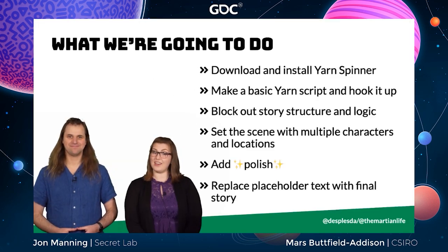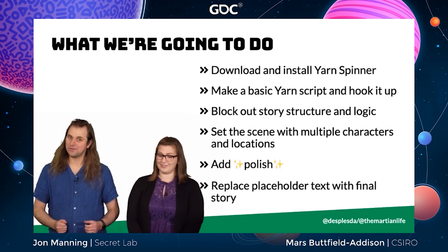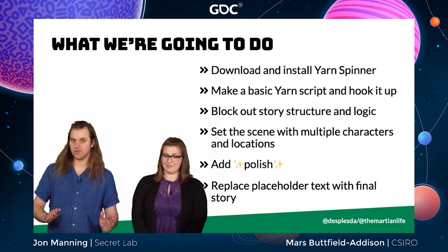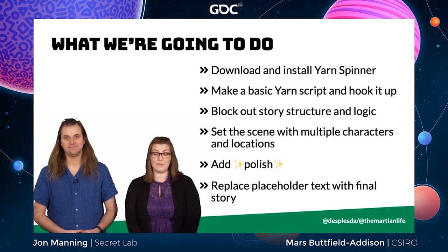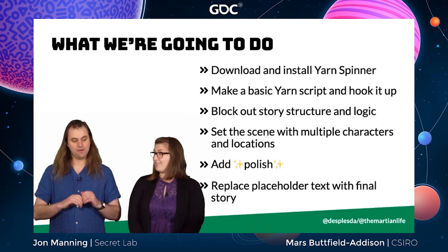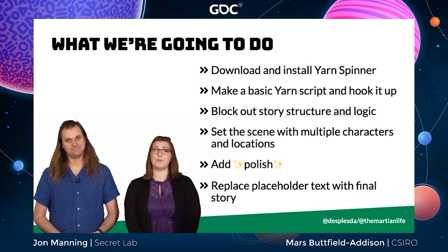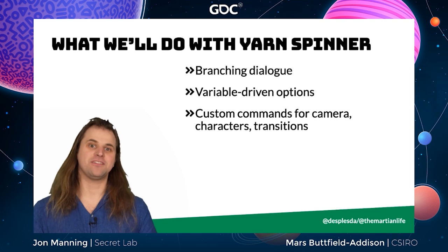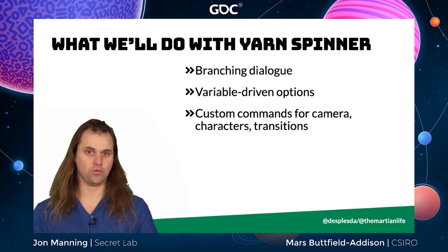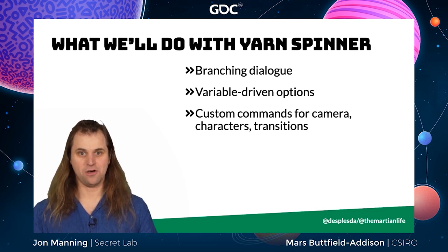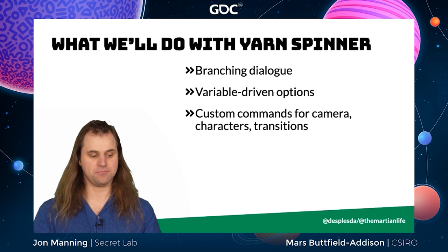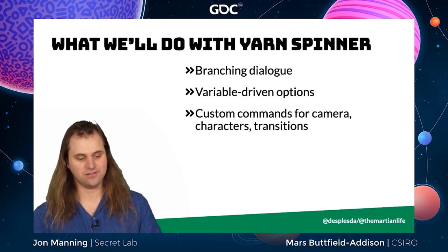Here's what we'll do today: download and install Yarnspinner, make a basic Yarn script and hook it up, block out our story structure and logic, set the scene with multiple characters and locations, add some polish, and replace placeholder text with a final story. We'll focus on branching dialogue, variable-driven options, and making custom commands for managing the camera, characters, and transitions.